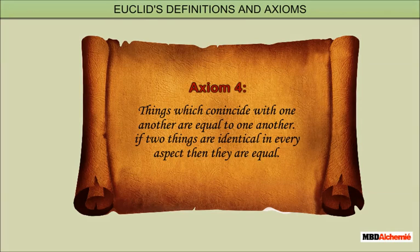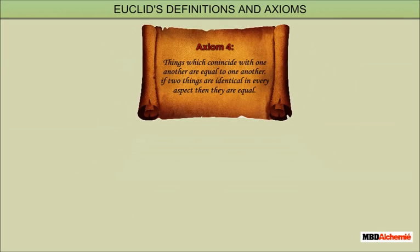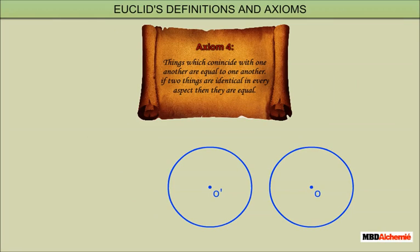Axiom 4: Things which coincide with one another are equal to one another. That is, if two things are identical in every aspect, then they are equal. Example: if two circles with centers O and O' are such that one superimposes the other, then the areas of the two circles are equal.